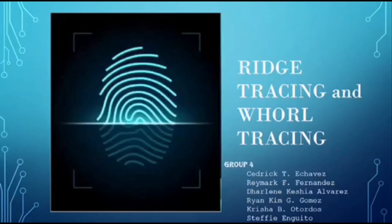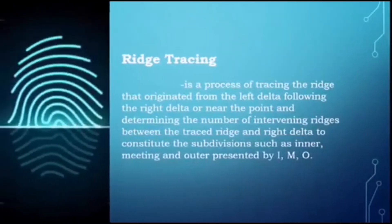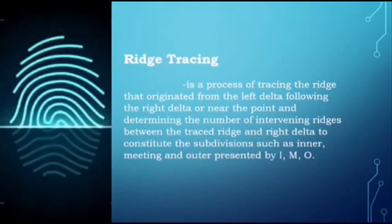So what is ridge tracing all about? Ridge tracing is a process of determining the ridge that originated from the left delta, following it to the right delta or near that point, and determining the number of intervening ridges between the trace ridge and the right delta.